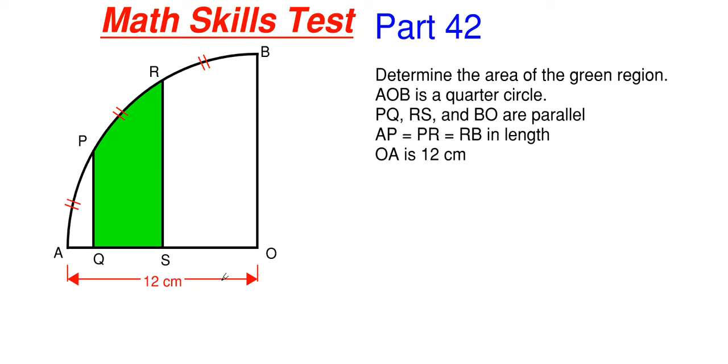We are told that P, Q, R, S, and BO are all parallel so that means everything's 90 degrees here with AO.